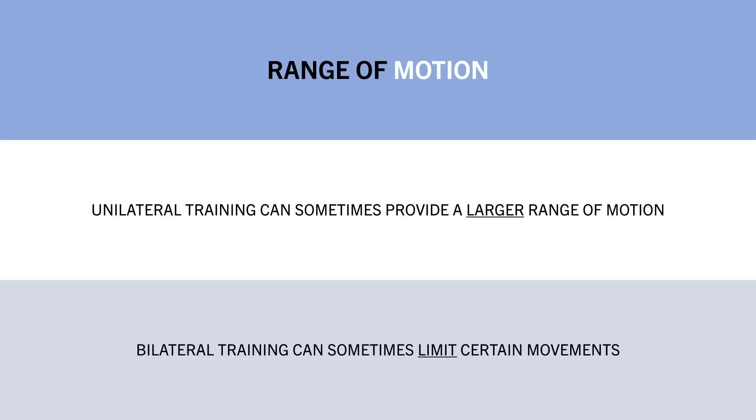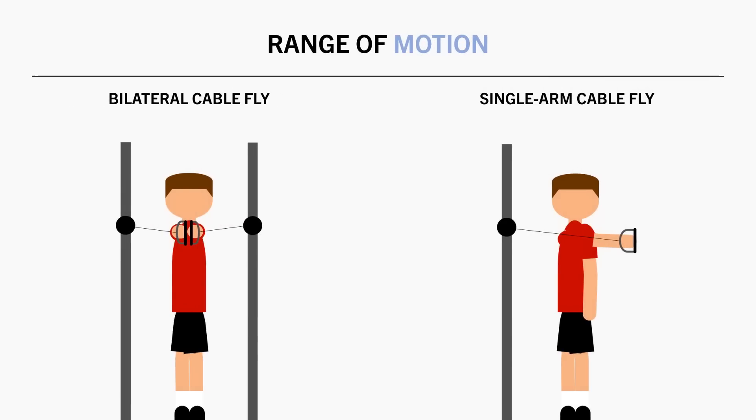For example let's look at a cable fly. A standard bilateral cable fly ends directly in front of our body where our hands meet. If we were to perform this same movement with one arm at a time we could end the movement past the midline of our body requiring the pec to contract through a greater range of motion. And this may result in a superior stimulus since more work is required by the muscle with each rep. So there may be some potential benefits for unilateral training over bilateral training, however there may also be some downsides which favor bilateral training.